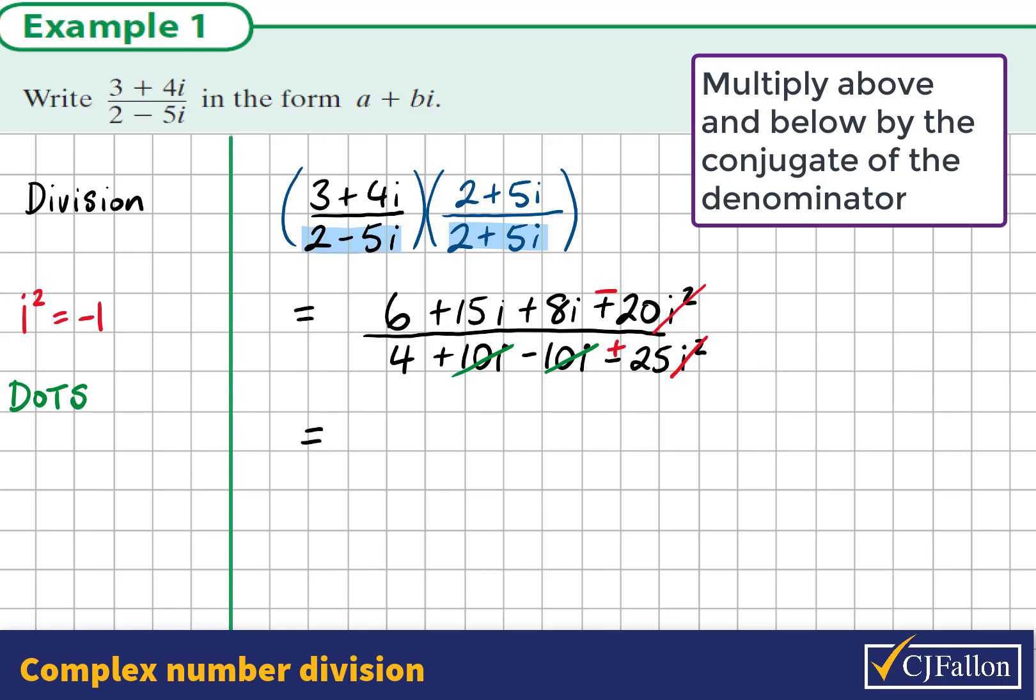So we're almost there now. Neatening up the top, adding the real parts, 6 minus 20 becomes negative 14. 15i plus 8i is 23i, and our denominator is 4 plus 25, which is 29. We have been asked in the question to write our solution in a very particular form, a plus bi. This means we must separate the real and imaginary parts of our answer. The real part is negative 14 over 29, and the imaginary part is 23 over 29i. And that is our solution.